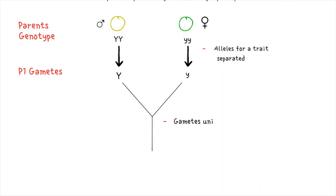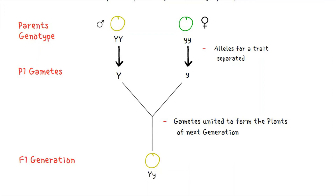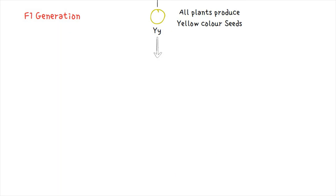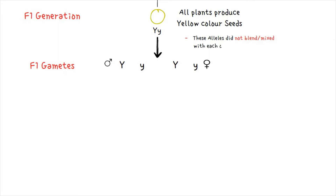These gametes unite to form plants of the next generation — the F1 generation. In this generation, all plants produce yellow seeds. The F1 plant produces two types of gametes: one gamete with the capital Y dominant allele and one gamete with the small y recessive allele. Importantly, these alleles did not blend or mix with each other in the F1 generation, but retained their separate identity.